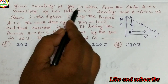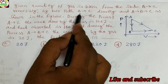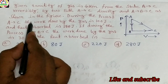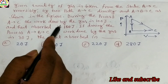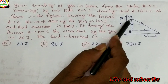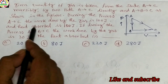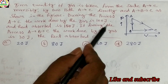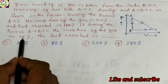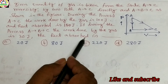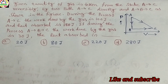A given quantity of gas is taken from the state A to C reversibly by two paths: A to C directly, and A to B to C, as shown in the figure. During the process A to C, the work done by the gas is 100 joule and heat absorbed is 150 joule. During the process A to B to C, the work done by the gas is 30 joule. What is the heat absorbed? Options: 20 joule, 80 joule, 220 joule, or 280 joule.